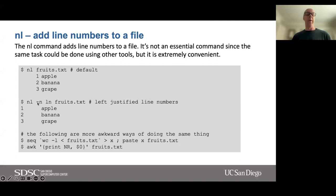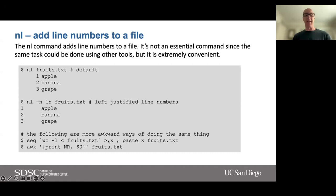If you're not happy with the output — the numbering begins in about column six and is right-justified by default — you can use the `-n ln` option, where ln stands for left numbering, so now we get left-justified line numbers. There are other ways we could have done this: we could have used the Linux `seq` command, piping in the number of lines in fruits.txt using `wc -l`, and then using paste to combine them. But if you just want simple line numbering, nl is a straightforward way to do it.